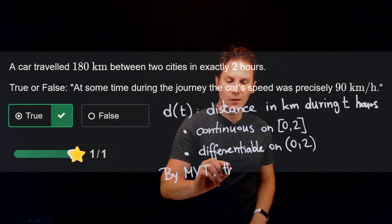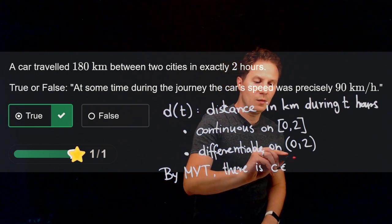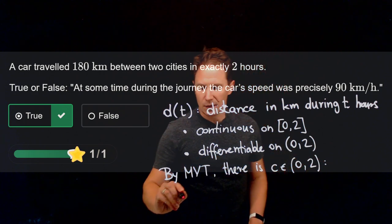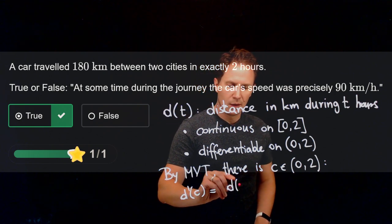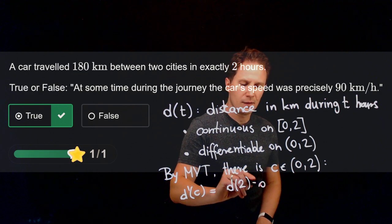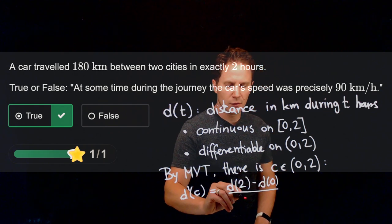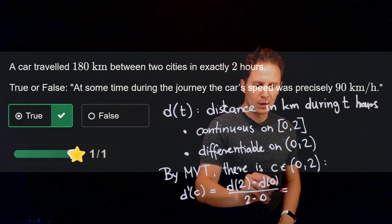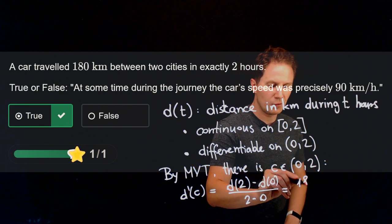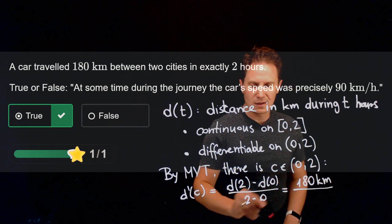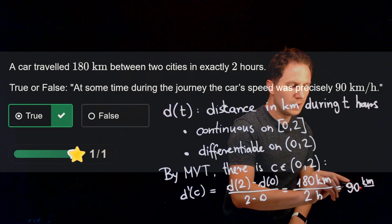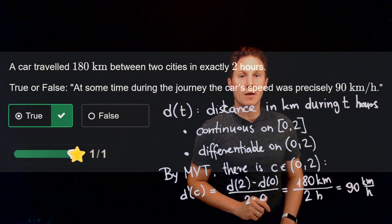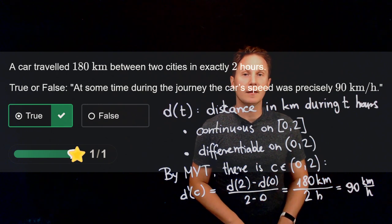The mean value theorem says there exists a moment in time between 0 and 2 hours at which the derivative of the distance function equals the slope of the secant line over [0, 2]. The change in distance is 180 kilometers and the change in time is 2 hours, so 180 over 2 is 90 kilometers per hour. Therefore there was indeed at least one moment in time at which the car's speed was exactly 90 kilometers per hour.